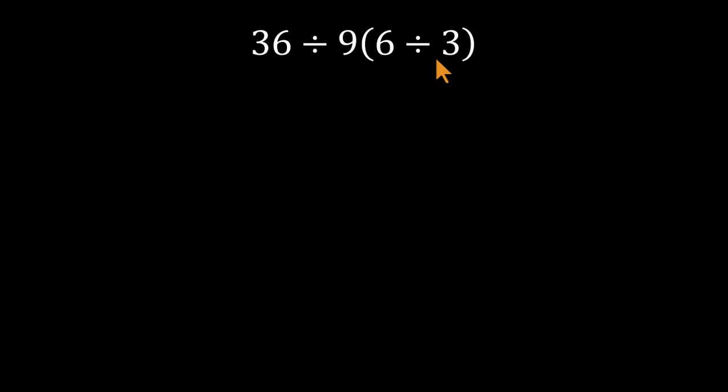They jump straight to the easy numbers first. 6 divided by 3 gives 2, then they multiply 9 by 2 and get 18, and finally they divide 36 by 18 and arrive at 2. Looks tidy, but that answer's wrong.